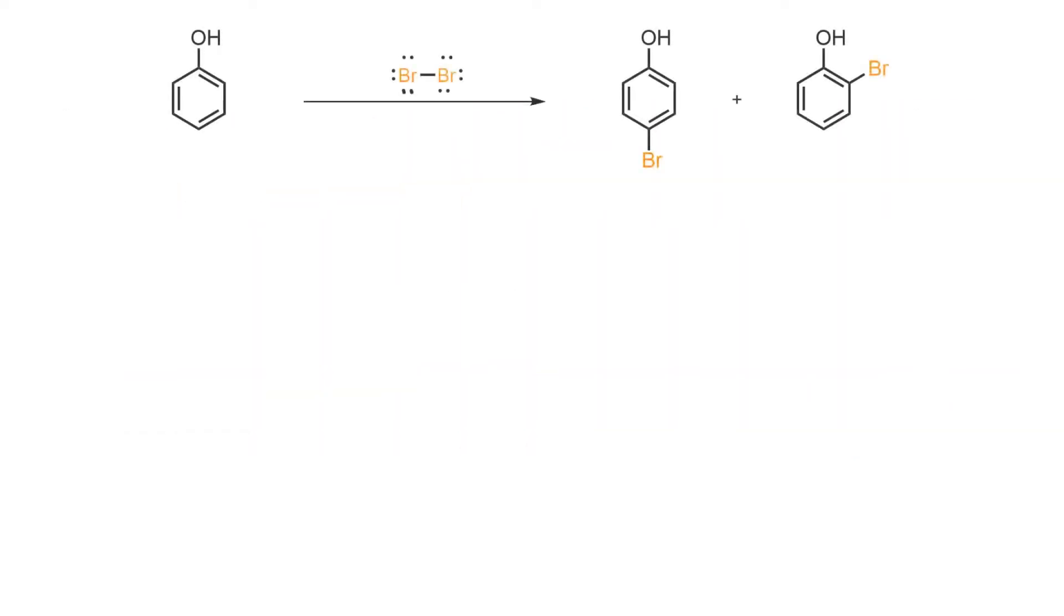Phenol is a highly activated aromatic system that reacts with electrophiles without the need for catalysis. For example, phenol can react with bromine without the need for a Lewis acid to be present to give a mixture of para and ortho substitution products.